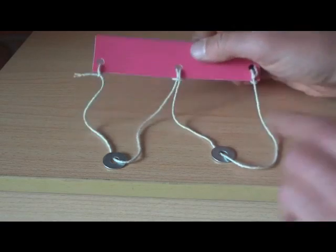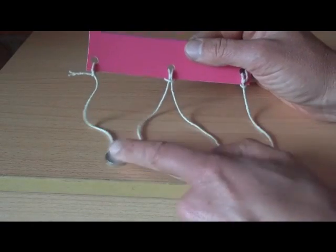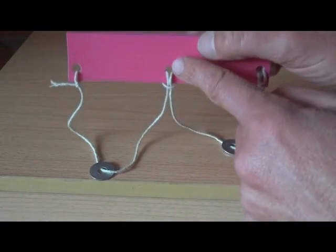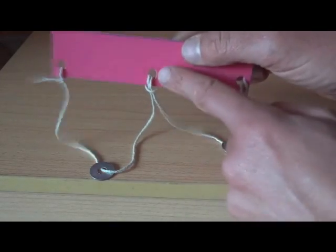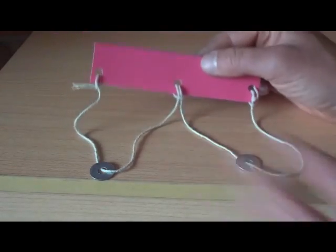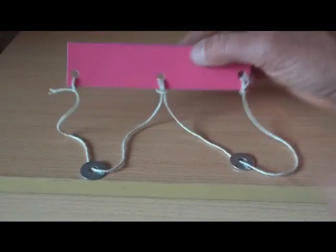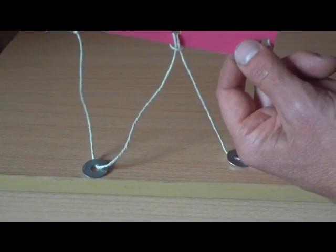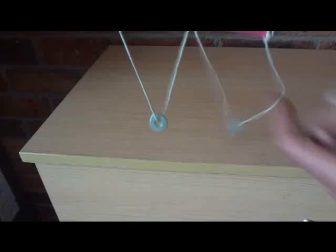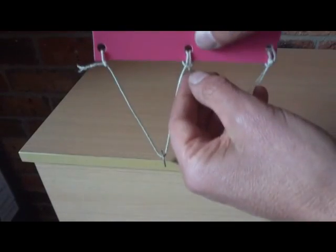The object is to get one of the washers over to the other side. Obviously these holes here are too small for the washers to pass through. So I'm going to show you how to move the string around so the washers will pass through to the other side.